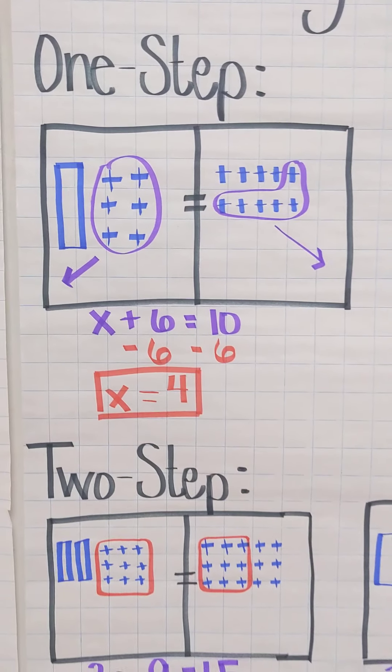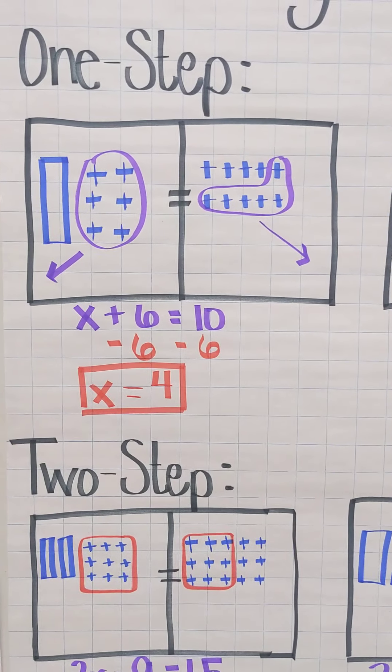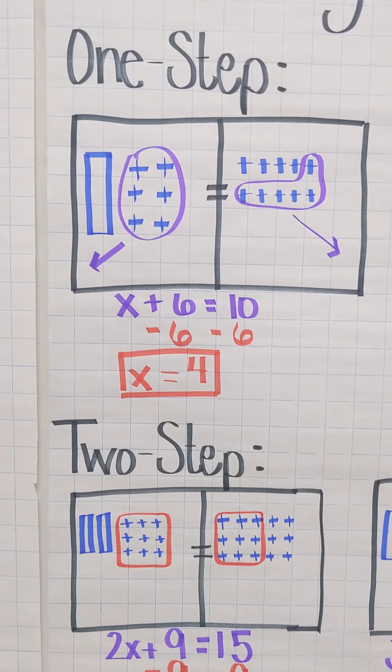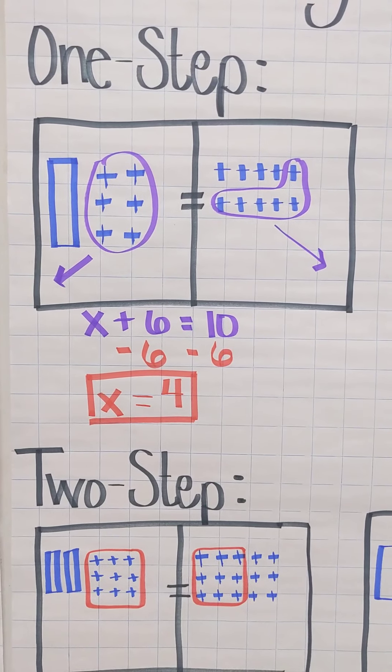We also did talk through the inverse operations. When you see addition, you undo it by subtraction. Multiplication, undo by division. So they do know how to do inverse operations. It's just right now a matter of preference as to what they prefer to see.